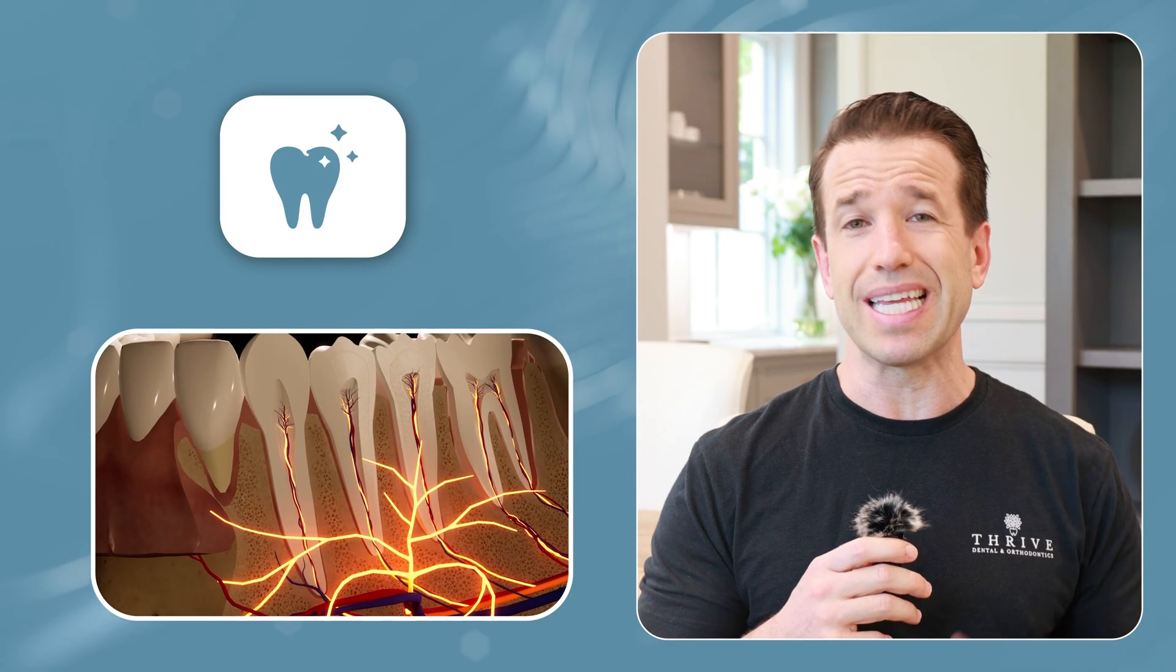Dentistry explained in one minute. Teeth are alive. Well, enamel isn't, but dentin is, and it gets blood flow from your pulp chambers that are within your teeth.